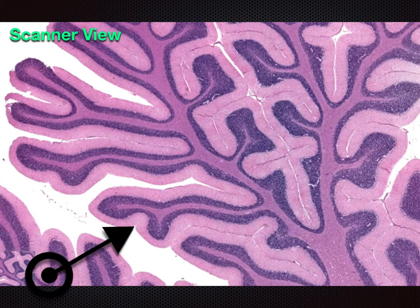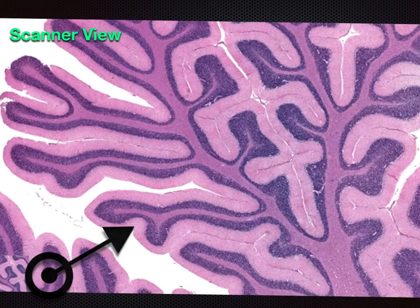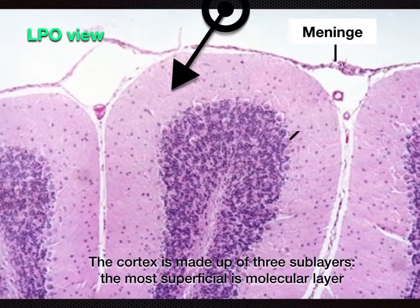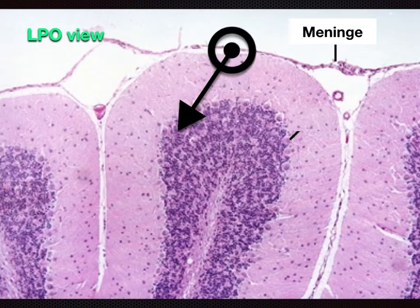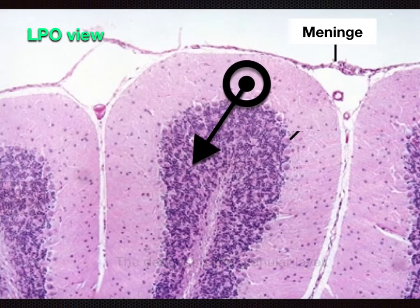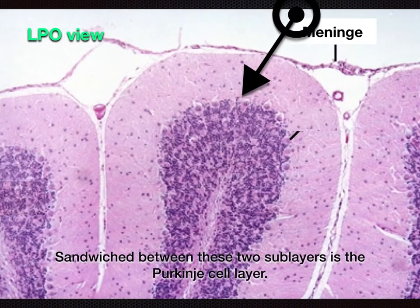Let us now view the cortex at LPO to visualize the three cerebellar cortex sublayers. The cortex is made up of three sublayers. The most superficial is the molecular layer. The deepest is the granular layer. Sandwiched between these two sublayers is the Purkinje cell layer.